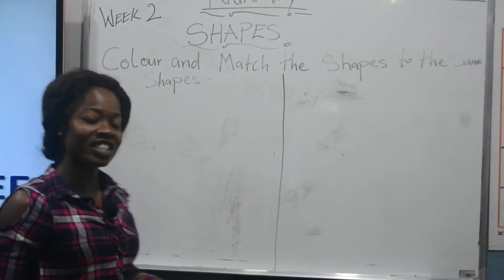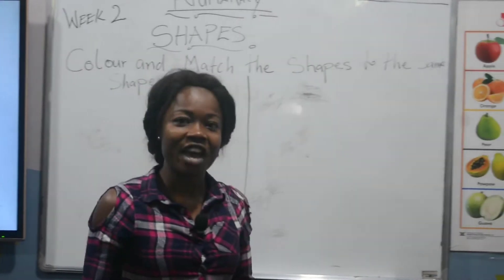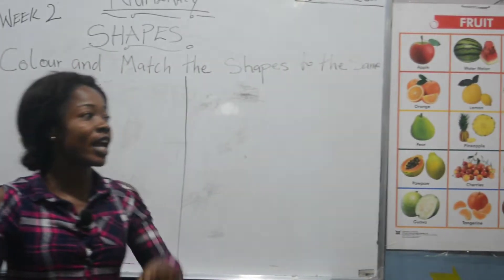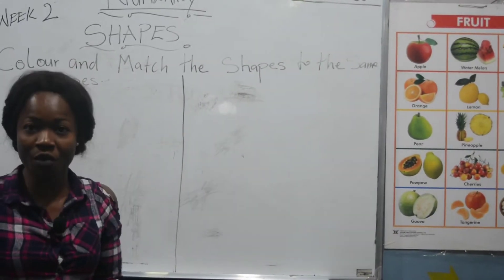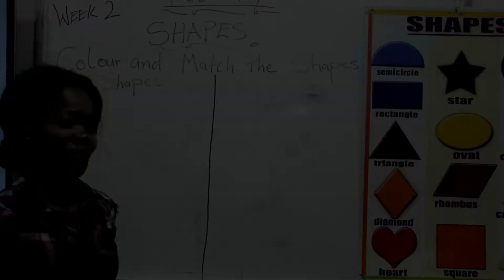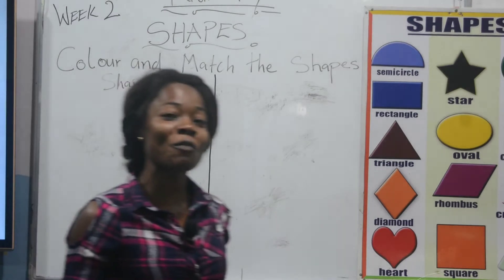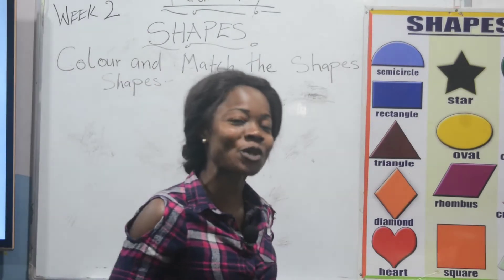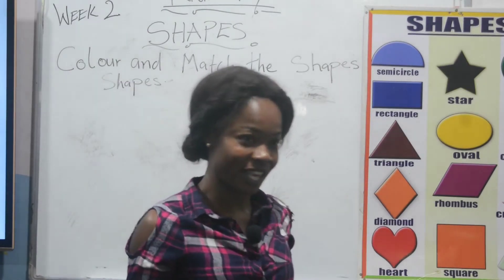What is a shape? A shape is an enclosed area of an object. We have so many examples of shapes.